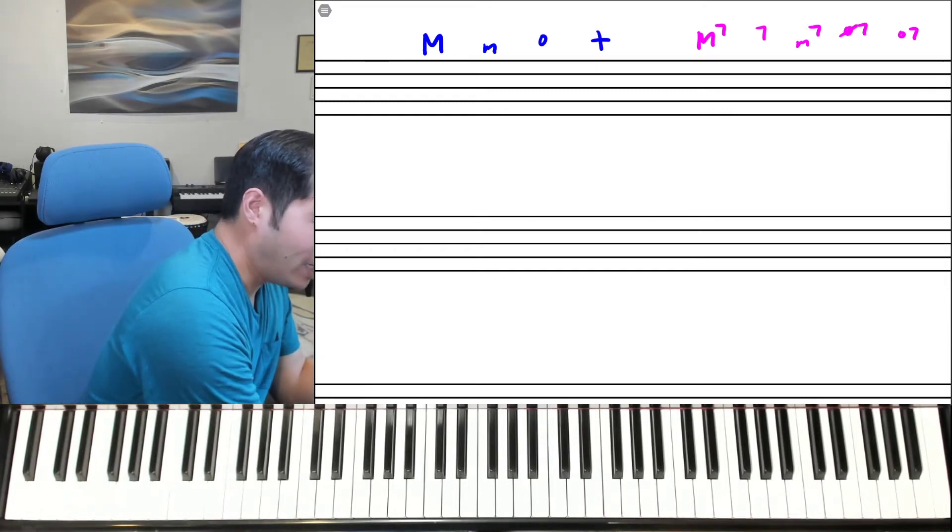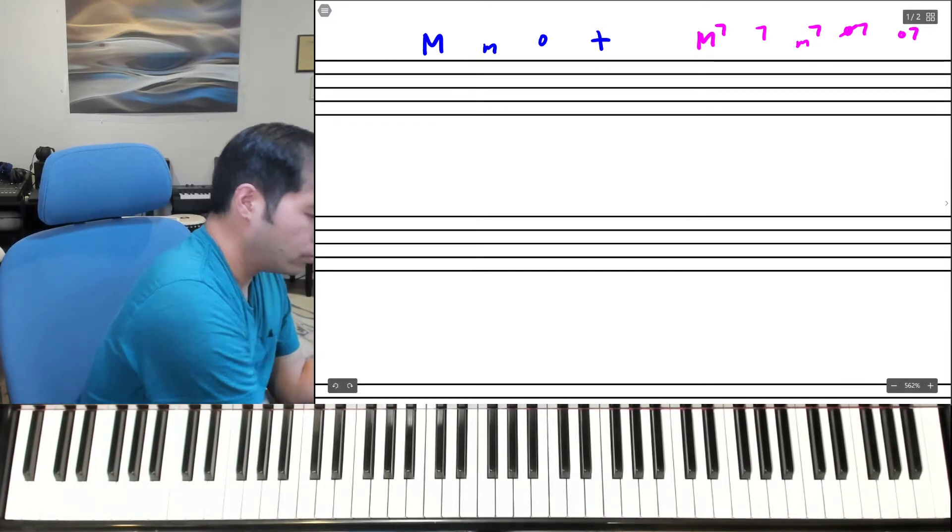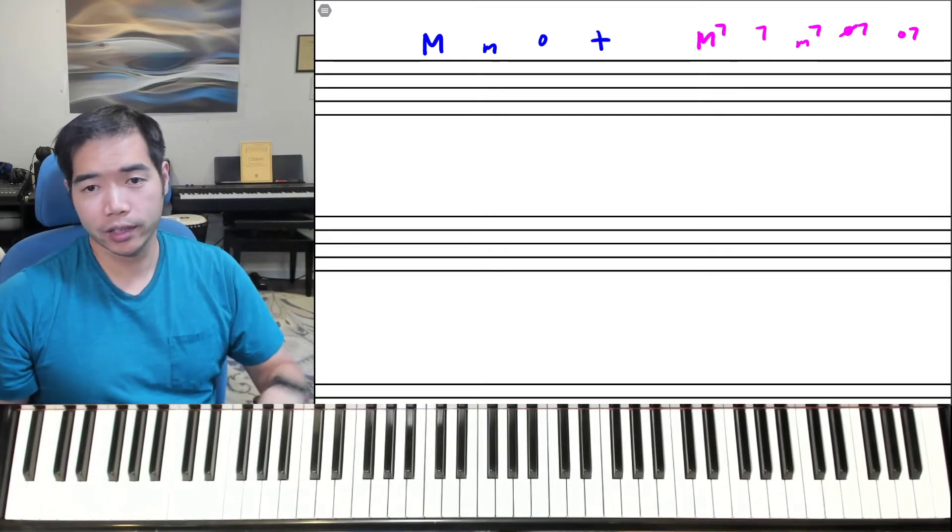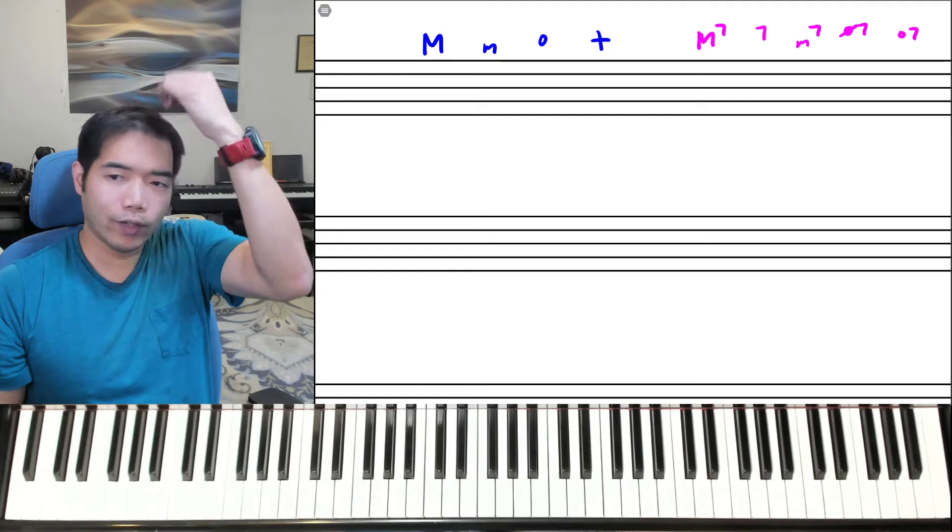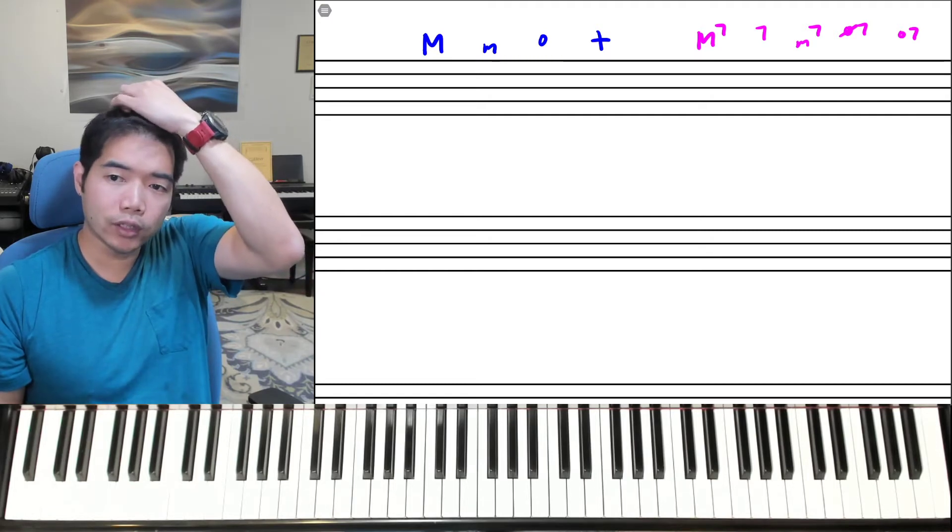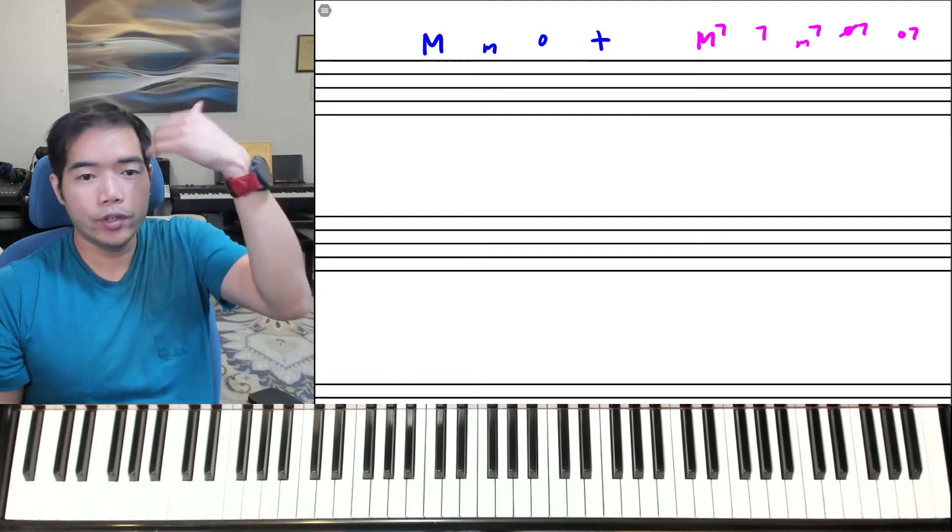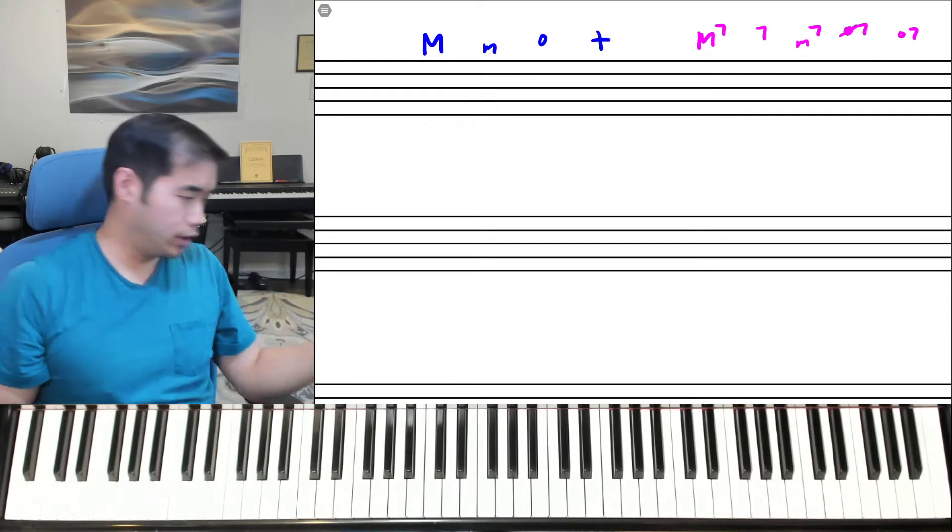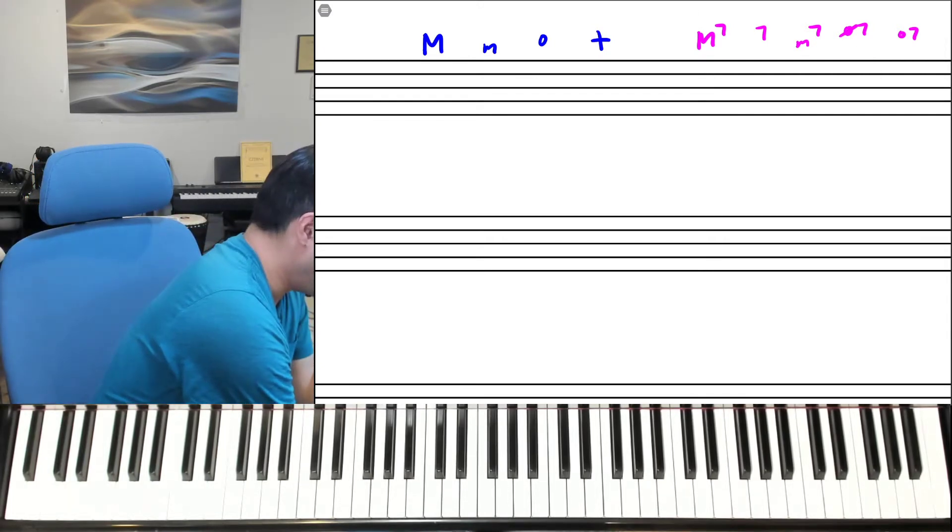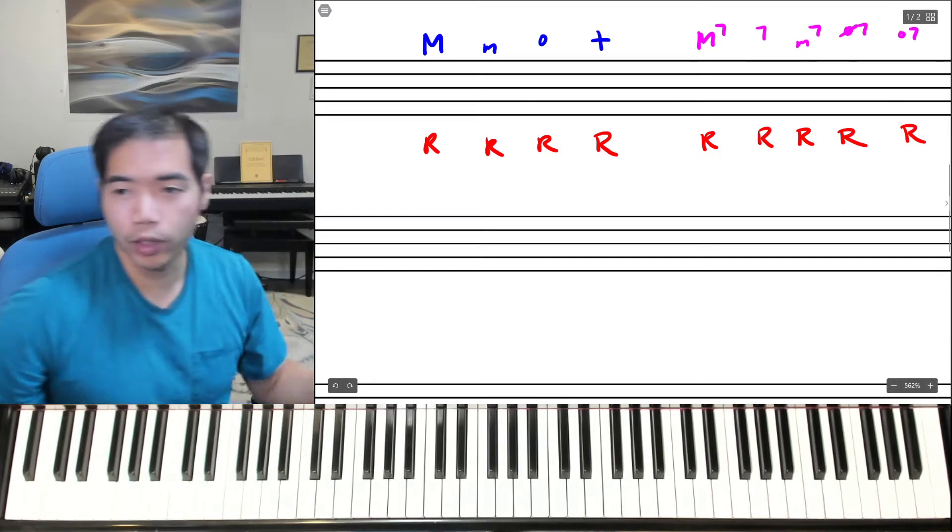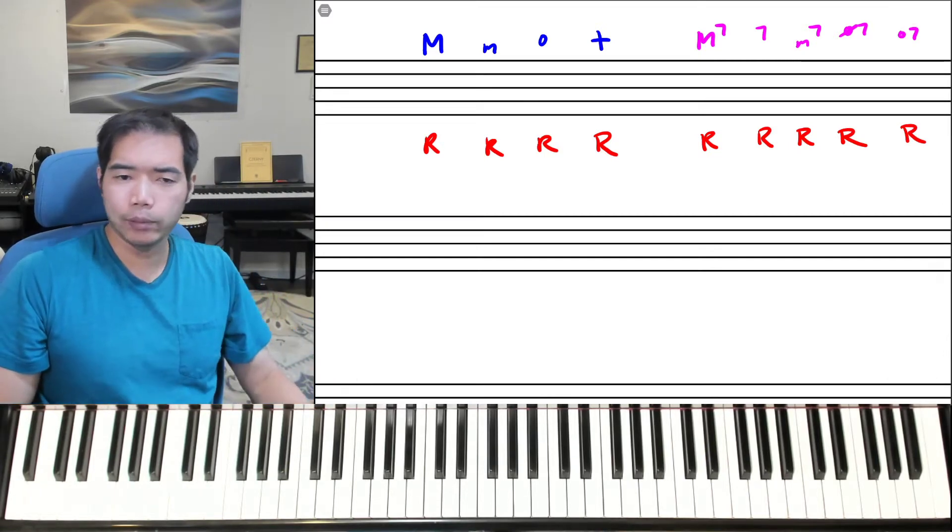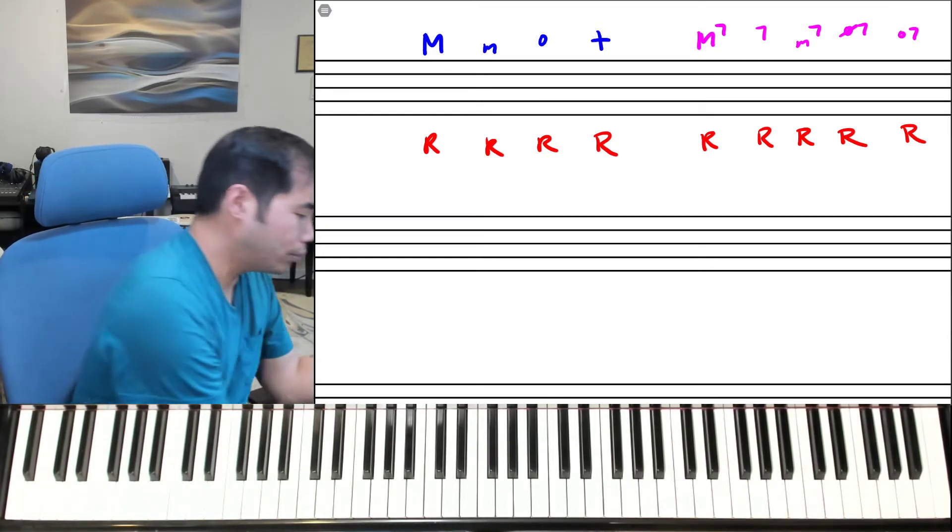In each of these, we have root, third, fifths for the triads, and root, third, fifths, sevens for the seventh chords. What we're going to do is figure out the minimum number of notes necessary to identify each of these. For each of these, you're going to need the root, because without the root, we don't know what the chord is. So that's absolutely necessary, it's always the most important.